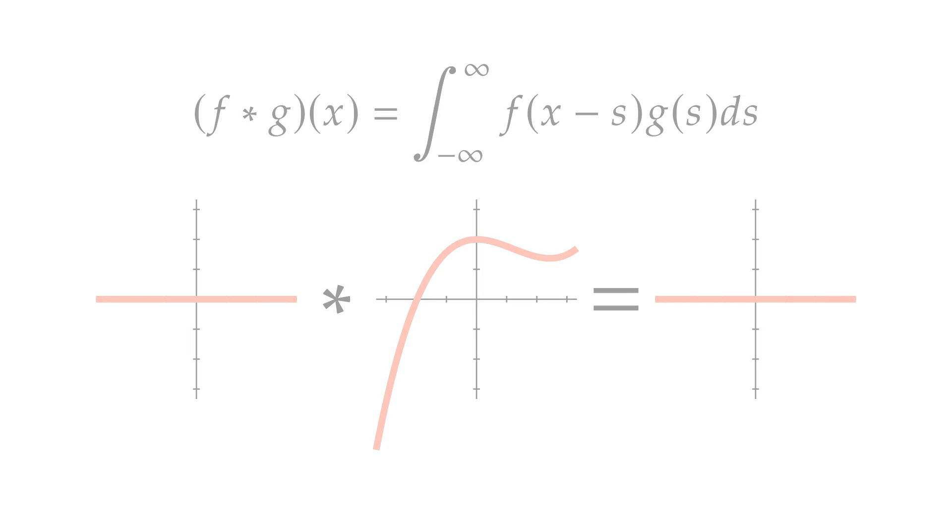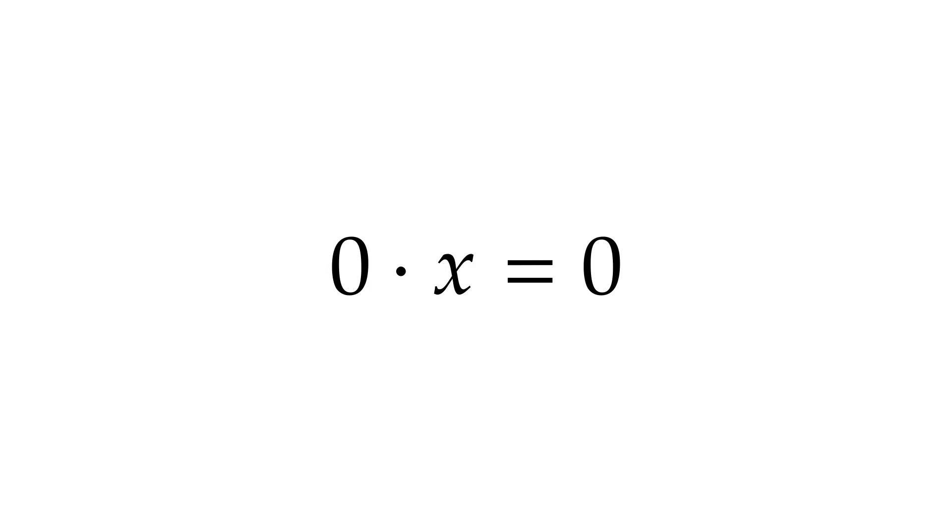And yet, we still end up with 0 times anything equals 0. Why? Let's prove it and see what about 0 actually makes this happen.